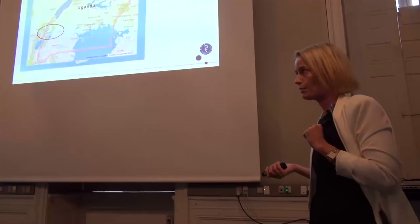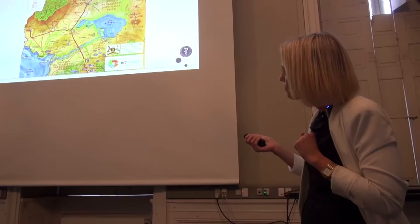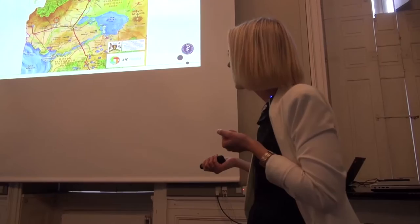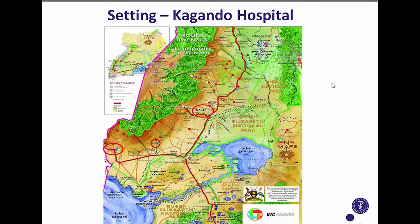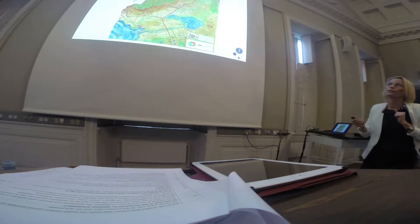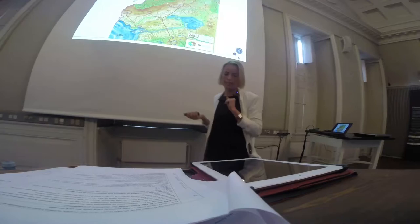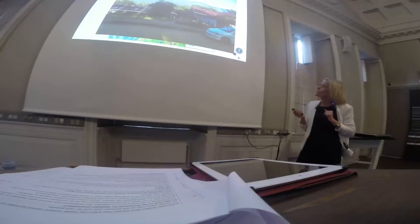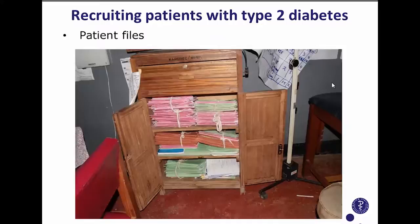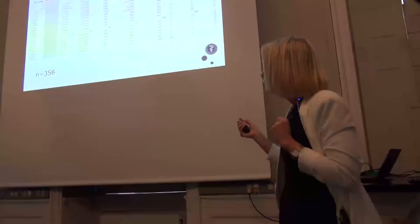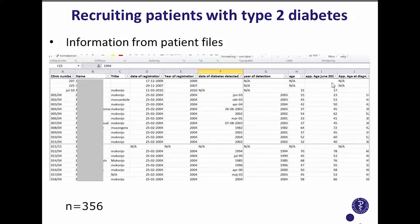In Kasese District, the hospital we used as our starting point is located approximately midway between the two largest towns. To give you an idea: if you live up in the mountains and need to go to the government hospital, it's like living in Copenhagen and going to a distant town for treatment. At the hospital, every week there is a diabetes clinic for adults with an educational component, and the hospital maintains files for all diabetes patients attending the clinic.